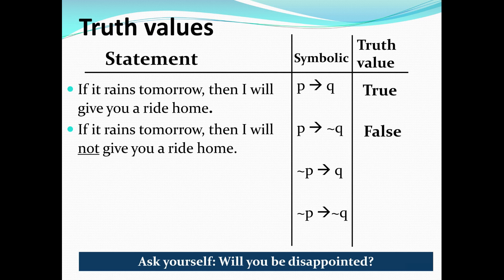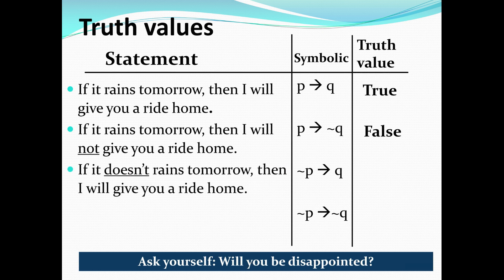For the third statement, 'if not P, then Q': if it doesn't rain tomorrow, then I will give you a ride home. This seems strange, but you're not disappointed. The statement is not exclusive — it doesn't say 'only if it rains.' If it doesn't rain, you still get the ride home, so you're not disappointed. Therefore, the truth value is true.